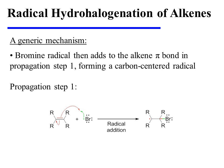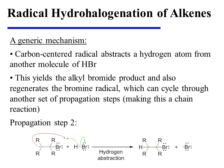In propagation step one, bromine radical adds to the alkene pi bond, forming a carbon-centered radical. In propagation step two, that carbon-centered radical abstracts a hydrogen from an unreacted molecule of HBr, generating the alkyl bromide reaction product and regenerating the bromine radical, which can cycle through another round of propagation steps, making this a chain reaction.